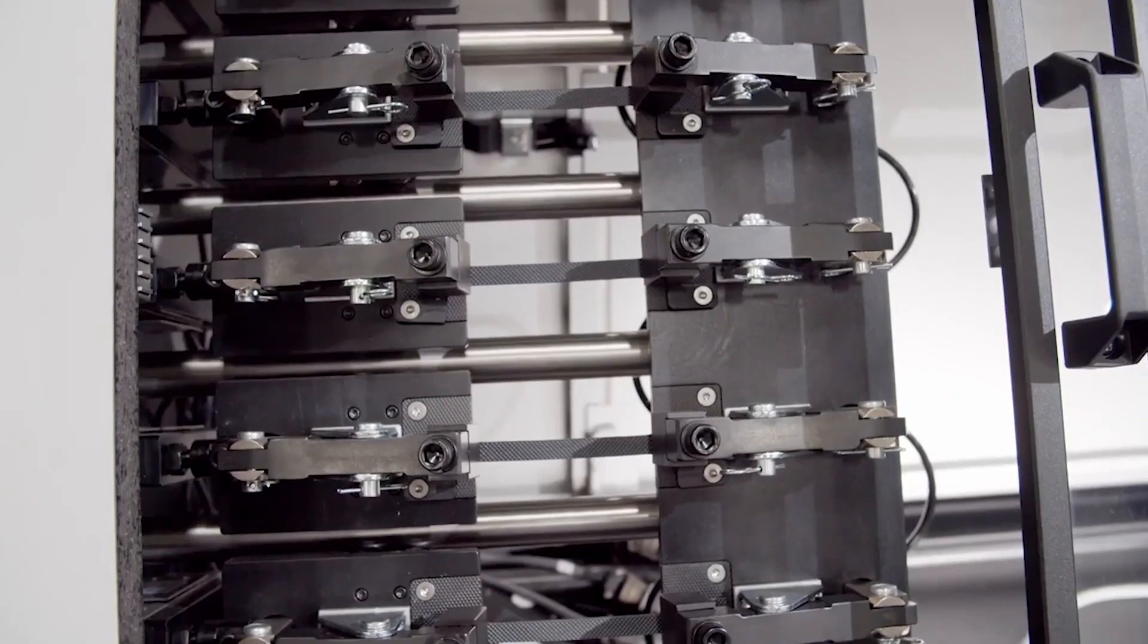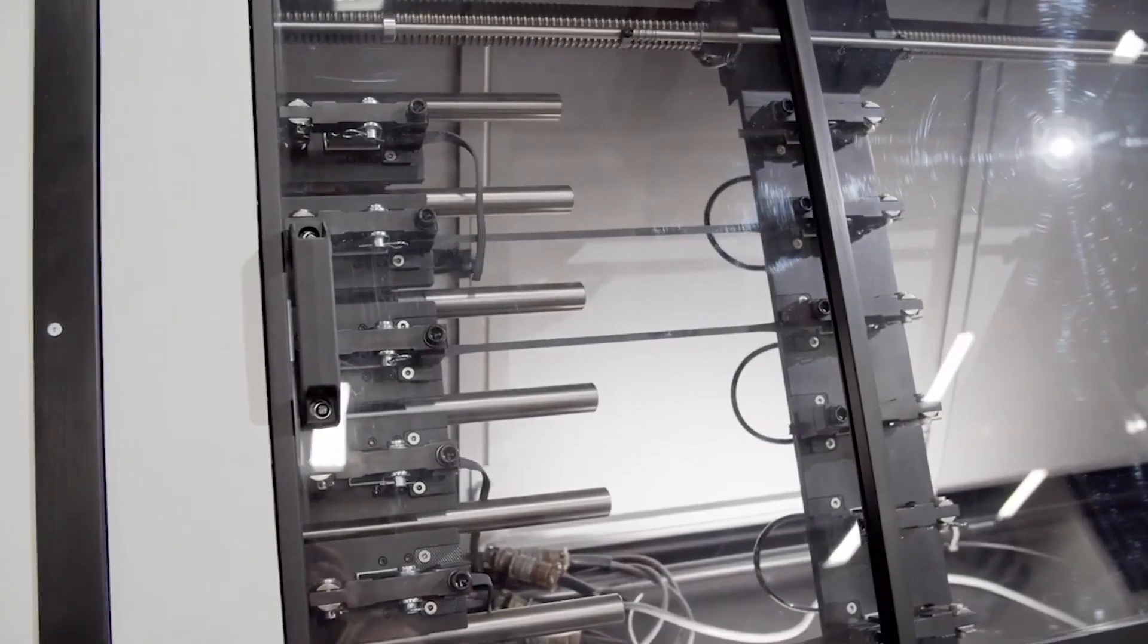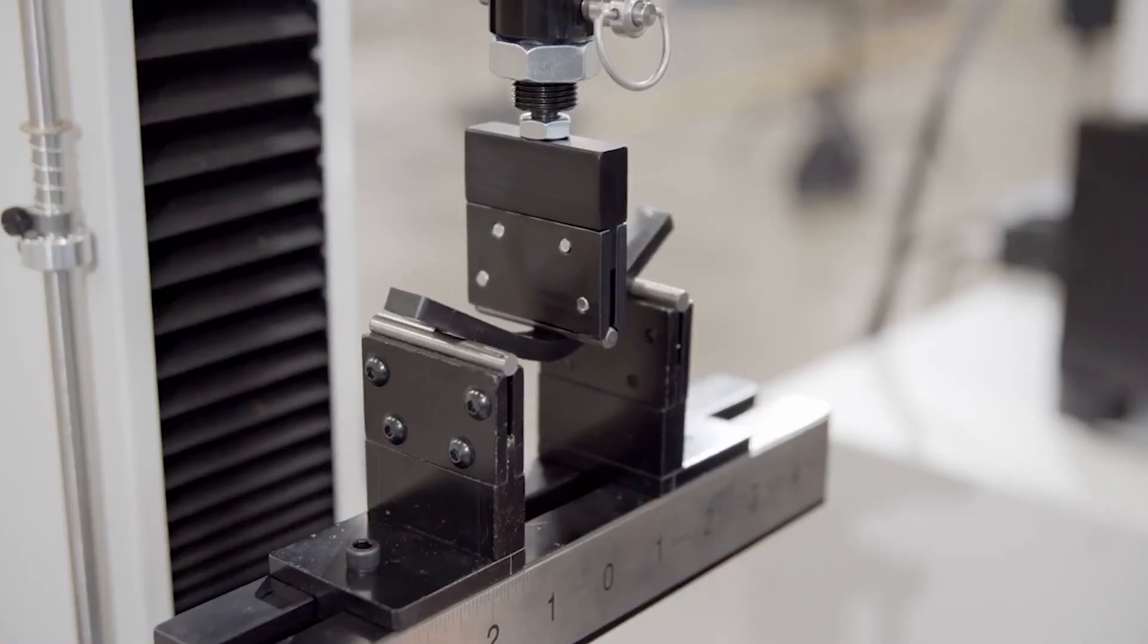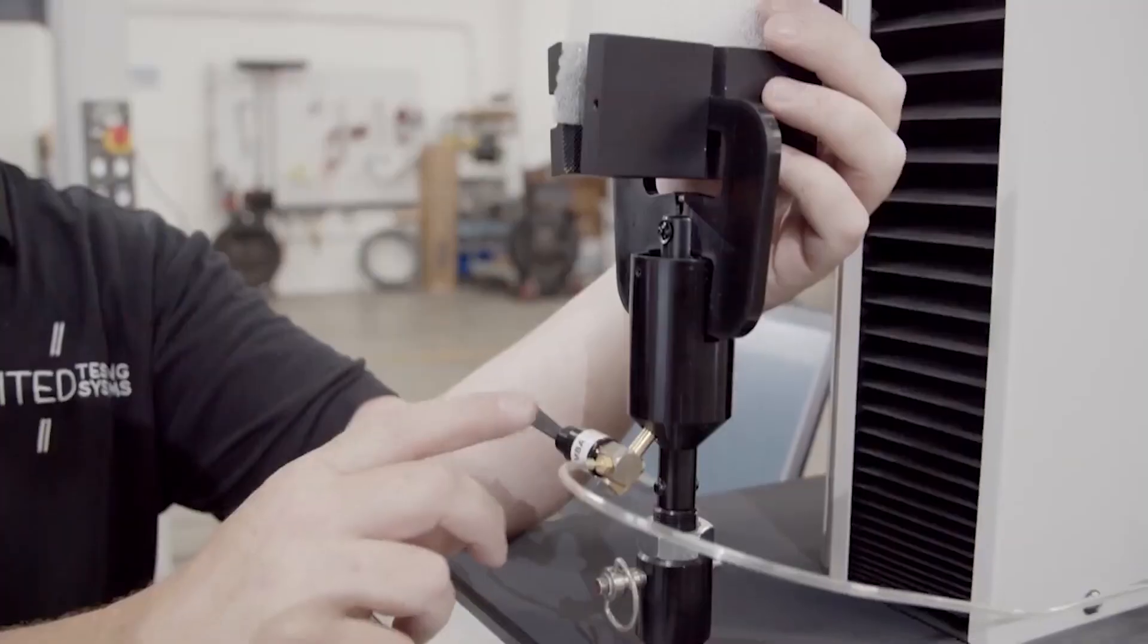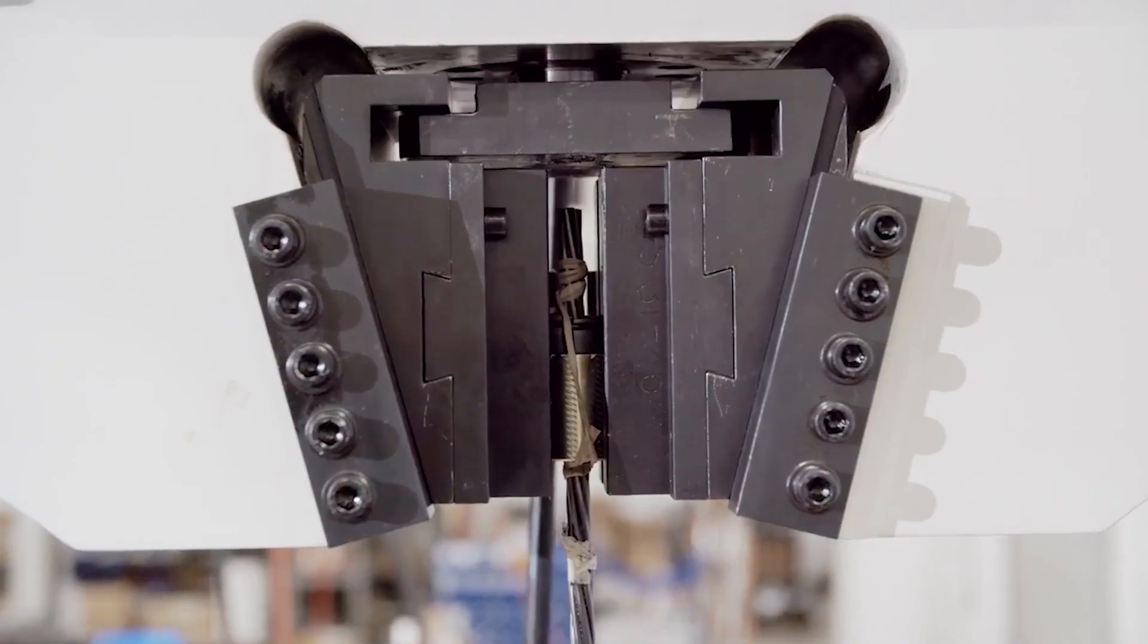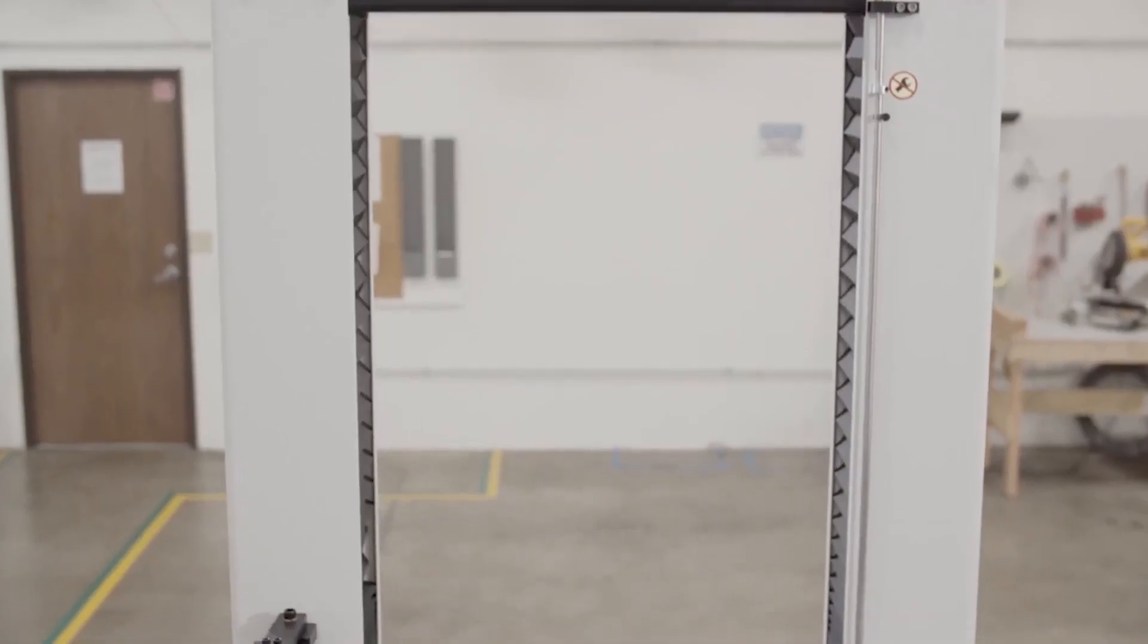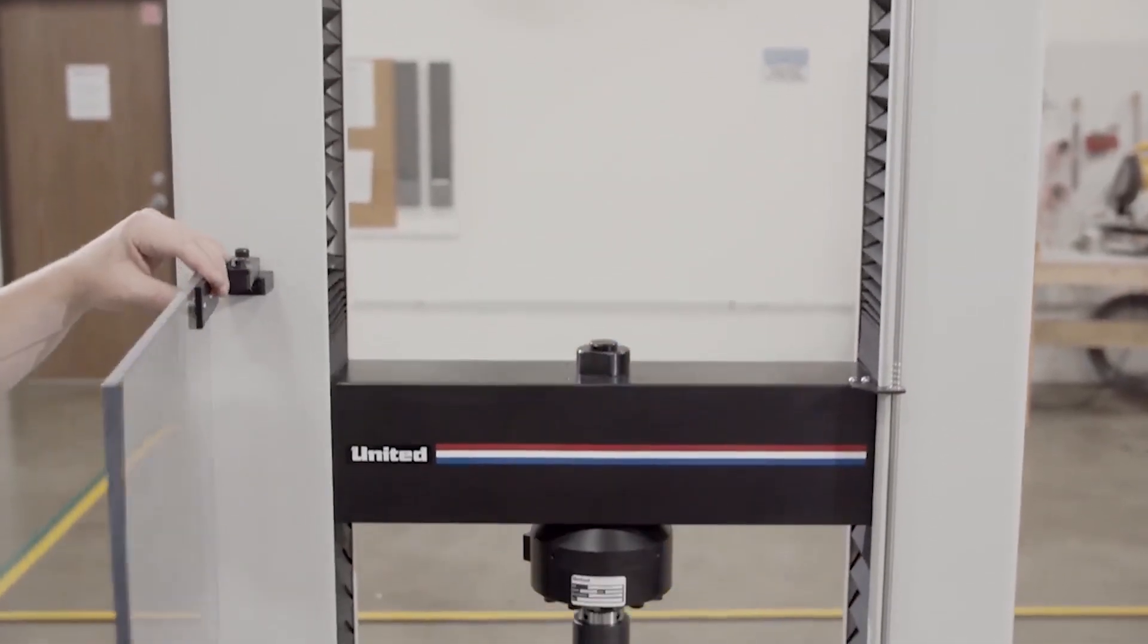In addition to test frames, United manufactures a complete line of grips and fixtures, including wedge grips, deluxe action grips, bend flex fixtures, compression plates, pneumatic grips, a variety of specialty grips, and custom-designed grips and fixtures for specialty applications.